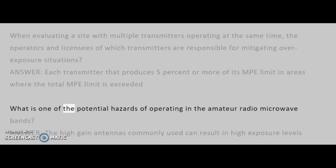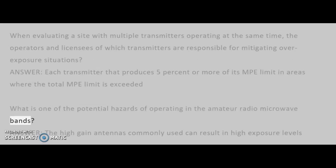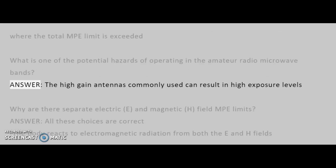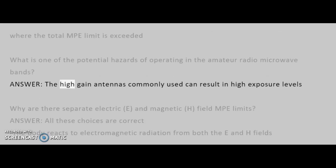What is one of the potential hazards of operating in the amateur radio microwave bands? Answer: The high-gain antennas commonly used can result in high exposure levels.